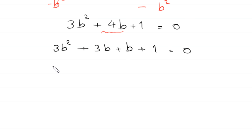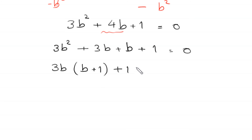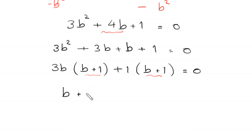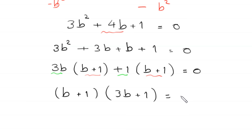This is a quadratic equation and it is factorable. We write 3b squared and split 4b as 3b plus 1b. From the first two terms we factor out 3b squared, leaving b plus 1. From the last two terms we factor out 1, leaving b plus 1. We then factor out the common b plus 1, giving b plus 1 times 3b plus 1 equals 0.